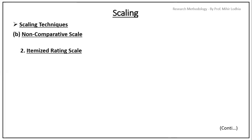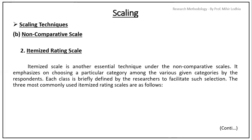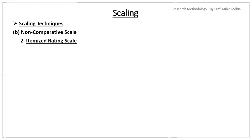Second one is itemized rating scale. The itemized scale is another essential technique under the non-comparative scales. It emphasizes on choosing a particular category among the various given categories by the respondents. Each class is briefly defined by the researchers to facilitate such selection. The three most commonly used itemized rating scales are Likert scale, Semantic differential scale and Stapel scale. Let's see one by one.